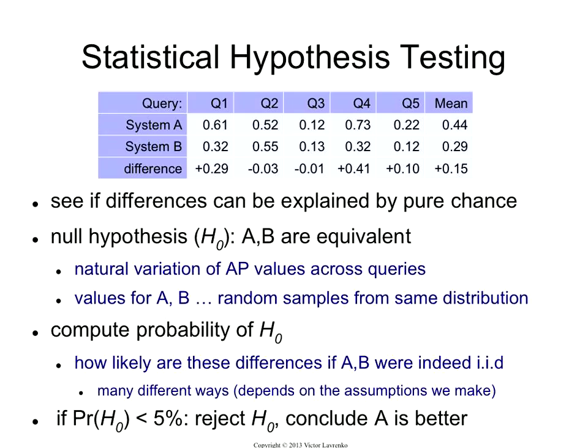But of course to do that, to generate a probability out of this set of numbers, you have to make some kind of an assumption about where these numbers come from. And depending on the assumptions you make, you end up with different statistical tests.